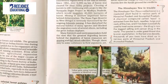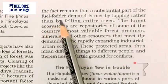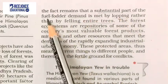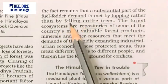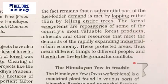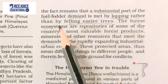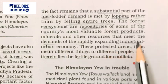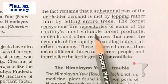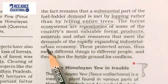Many forest environmentalists hold the view that the greater degrading factors behind the depletion of forest resources are grazing and fuel wood collection. The fact remains that a substantial part of the fuel and fodder demand is met by looping rather than by felling entire trees. The forest ecosystem is a repository of some of the country's most valuable forest products, minerals, and other resources that meet the demand of the rapidly expanding industrial and urban economy.